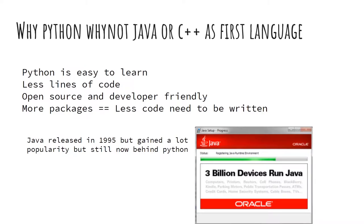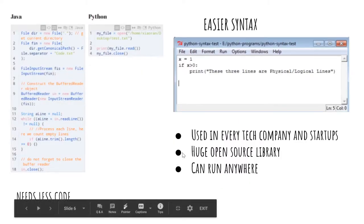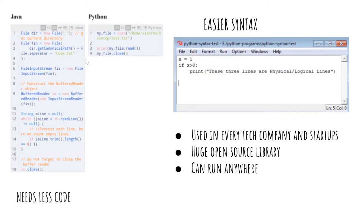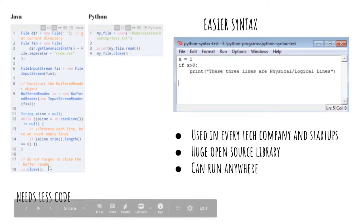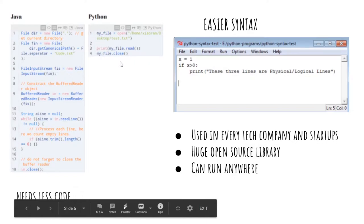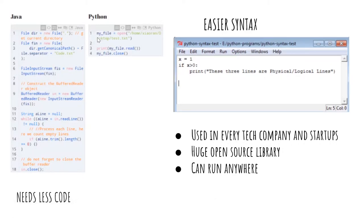But after the introduction of Python, Java has been knocked out. Python is the king of languages now — just like Java, Python can be executed anywhere from web servers to data servers. Comparing Python to Java: opening a file in Java requires 18 lines with complex syntax, while the same task in Python can be done in nearly three lines.